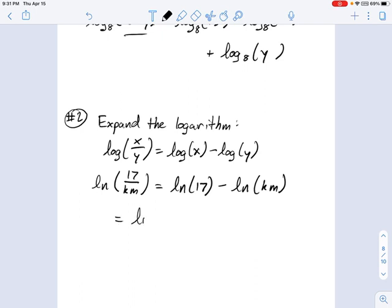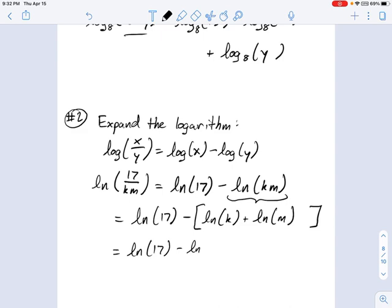This becomes natural log of 17 minus, I'm going to put a big bracket here because there's stuff going inside there. What is this natural log of km? That's the natural log of k plus the natural log of m. And since it's all inside a bracket with a minus sign on the outside, I can write that as natural log of 17 minus the natural log of k minus the natural log of m.